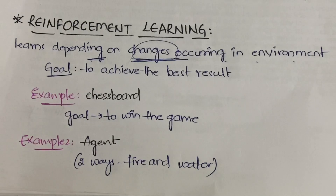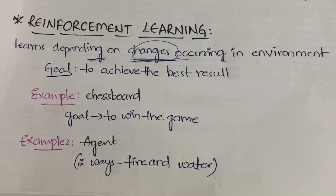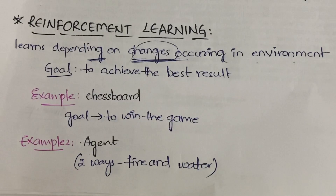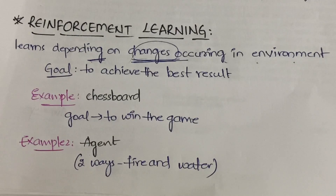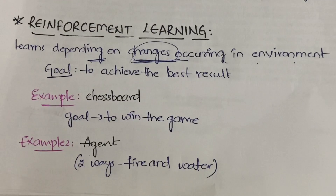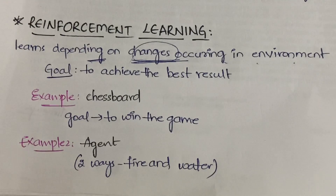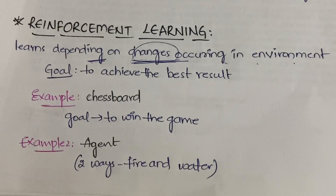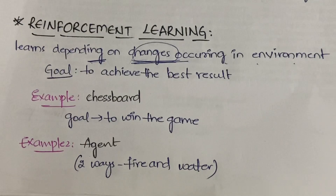What is the main goal in reinforcement learning? Not only in reinforcement learning, but in each and every learning strategy, our main goal is to achieve the best result — always get the most efficient outcome. For example, if you are playing chess, your goal is to win the game. Your opponent has to lose and you should win.